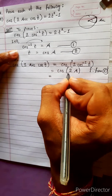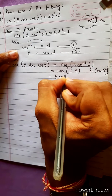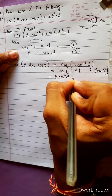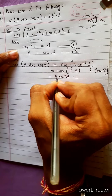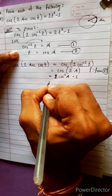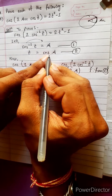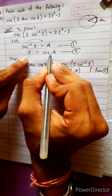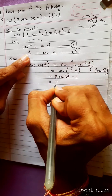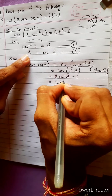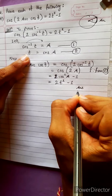Do you know the formula of cos 2a? Cos 2a means 2 cos square a minus 1. Okay, this is the formula. Now, cos a equals t, so cos square a means t square. Therefore 2t square minus 1. This is the answer.